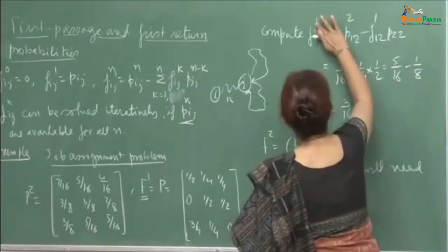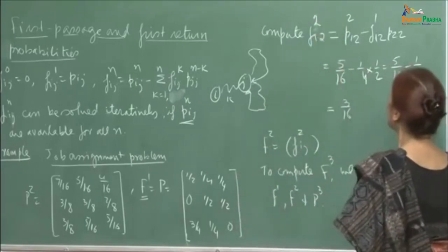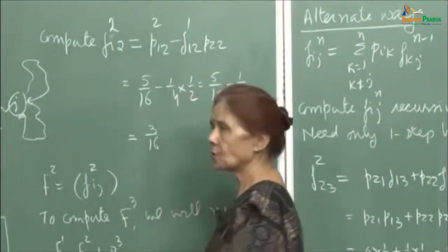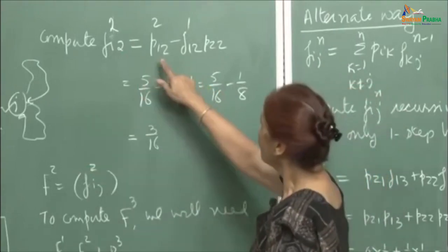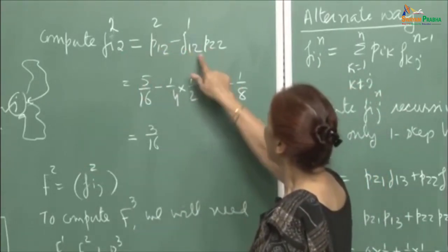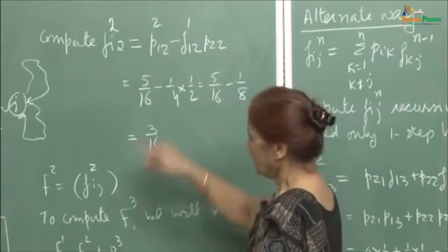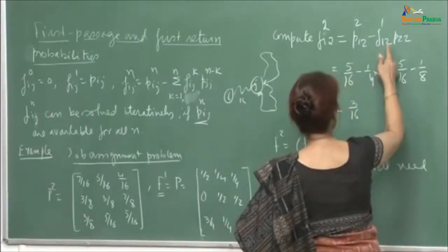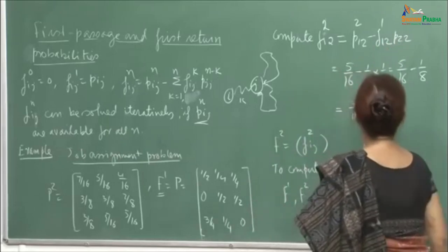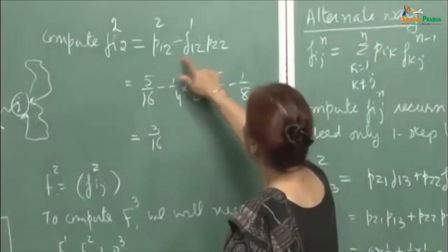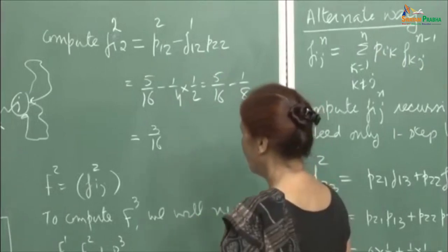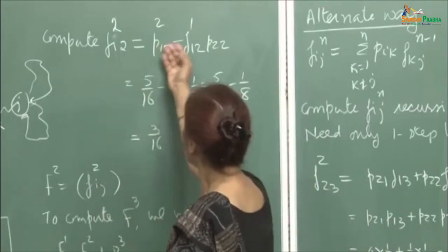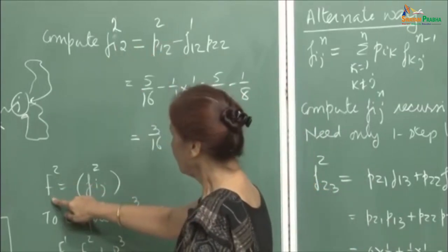To compute f2(1,2), the probability of transitioning from state 1 to 2 in two steps for the first time: by the formula, this is p_12(2) minus f_12(1) times p_22. That means in one step you go from 1 to 2 and then stay at 2, because there is only one remaining step. Computing this gives 3/16. You have to compute all two-step transition probabilities before computing the three-step first passage transition probabilities. For computing f3 you would need f1, f2, and p1, p2, p3.